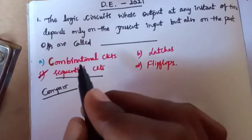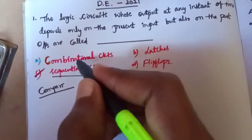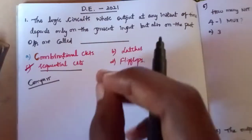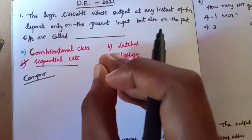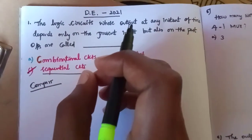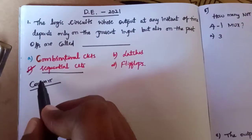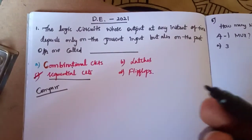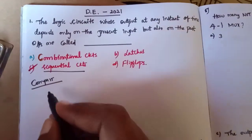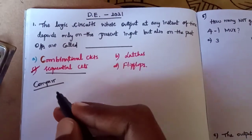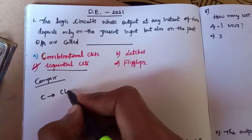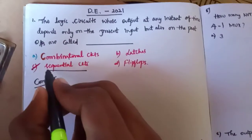We will see the combinational circuit and sequential circuit. The combinational circuit: its output is determined by the present value of inputs only. The sequential circuit depends on both the present input values and past input values. The combinational circuit does not need a clock.